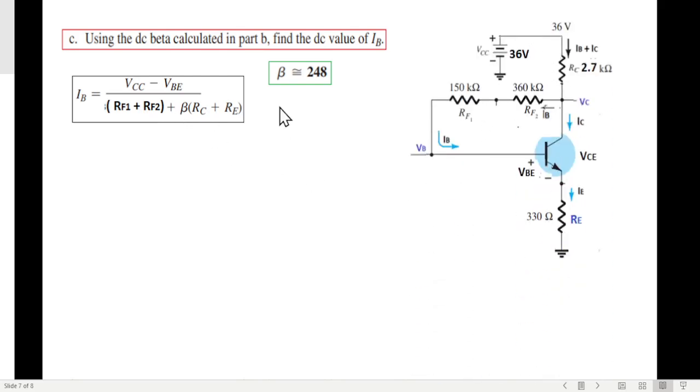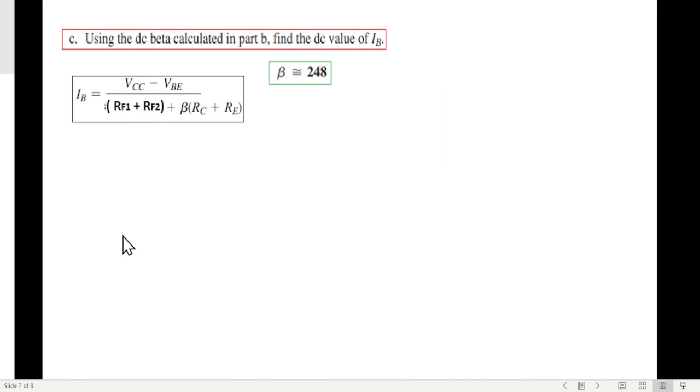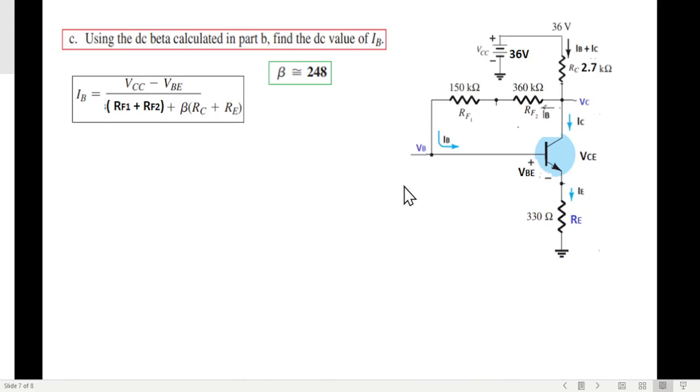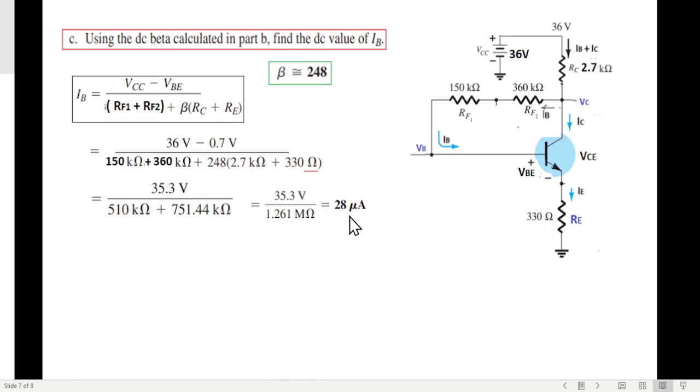Again bringing the circuit and putting in all the values: 36 volt, VBE is 0.7, 150, 360, beta is 248, RC 2.7 and RE 330 ohm. Now remember when you are doing calculation, all the other terms are in kilo but this is in ohms, so you have to be careful. Calculating, we find IB to be 28 microampere. So this is the correct IB. We have assumed IB to be 25, but actual value is 28.